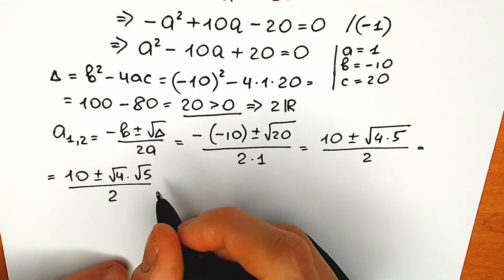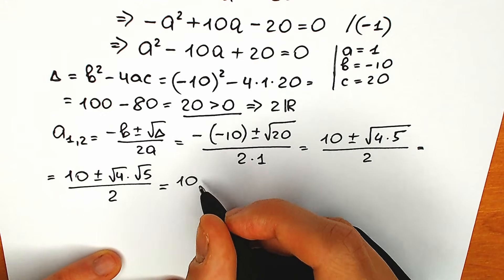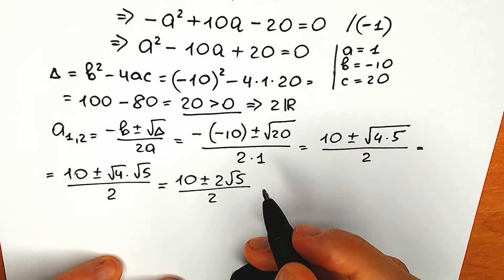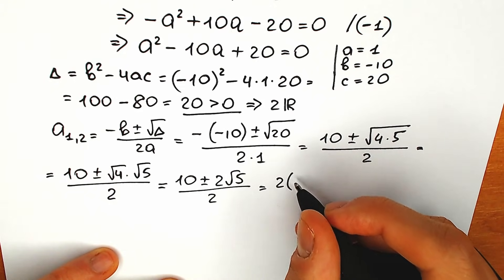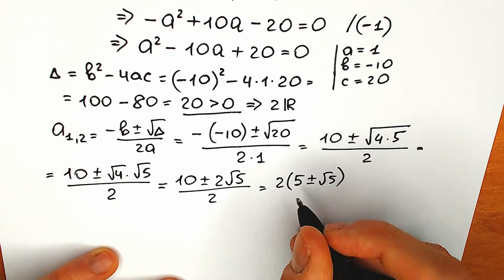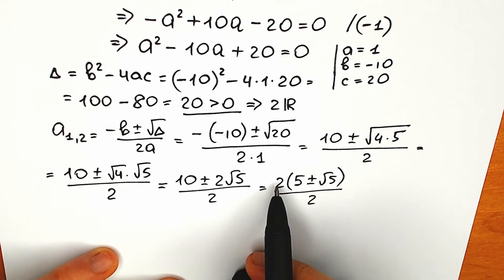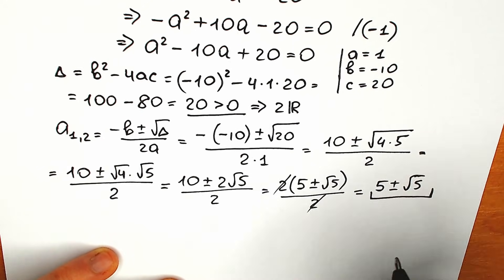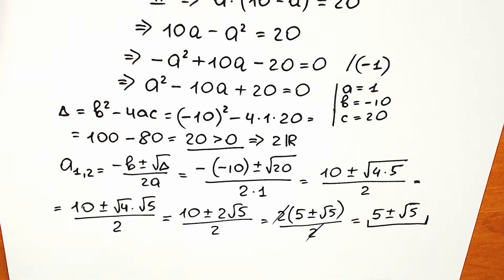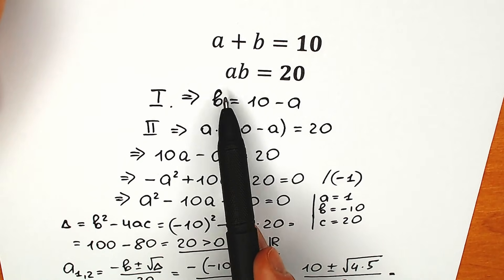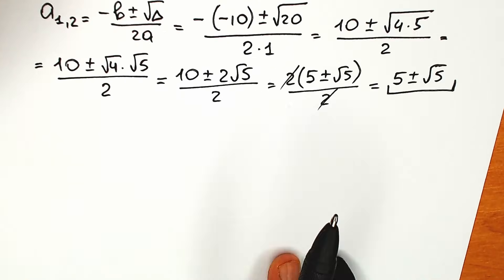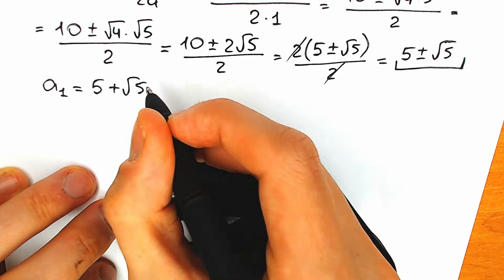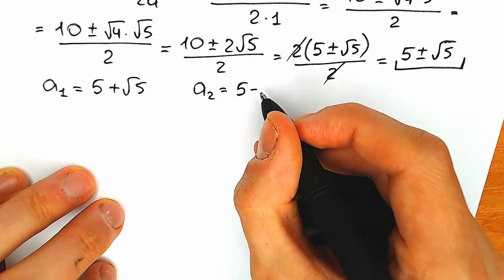All over 2. We can write square root of 4 as 2, so we have 10 plus-or-minus 2 root 5 over 2. We factor 2 from the numerator: 2 times (5 plus-or-minus root 5) divided by 2. The 2s cancel, leaving 5 plus-or-minus square root of 5. So a first equals 5 plus square root of 5, and a second equals 5 minus square root of 5.